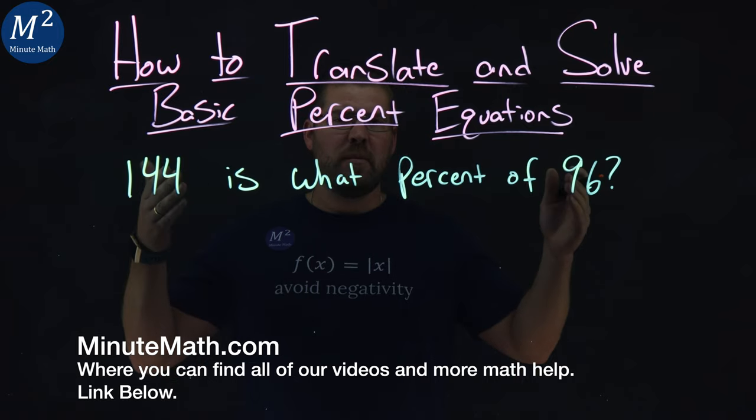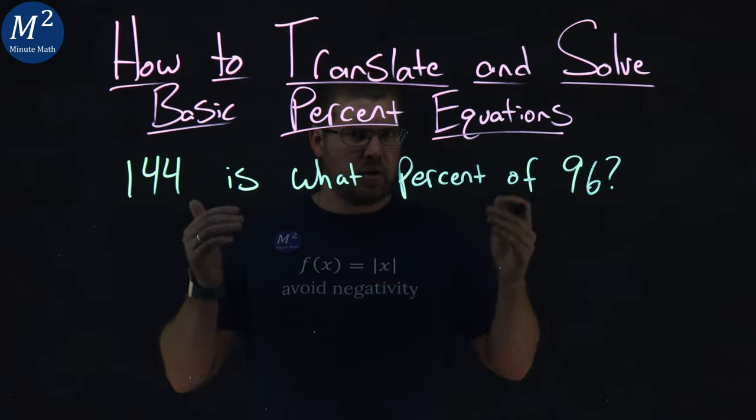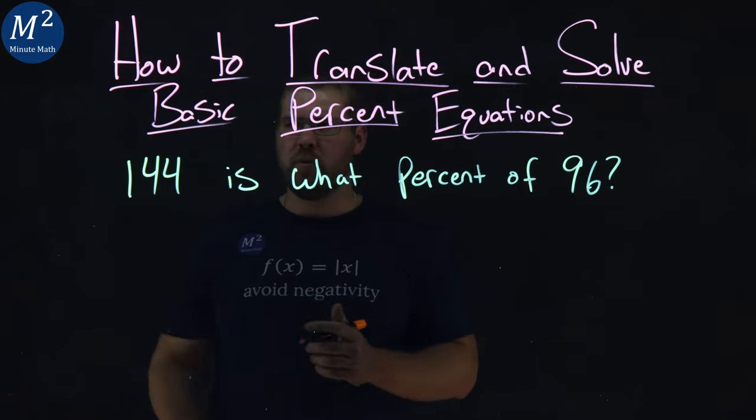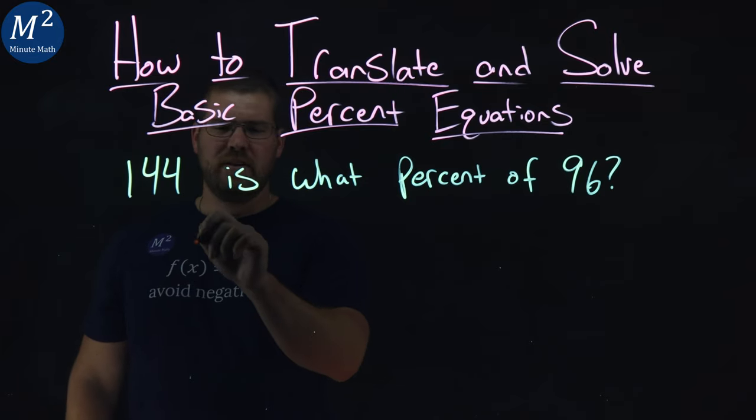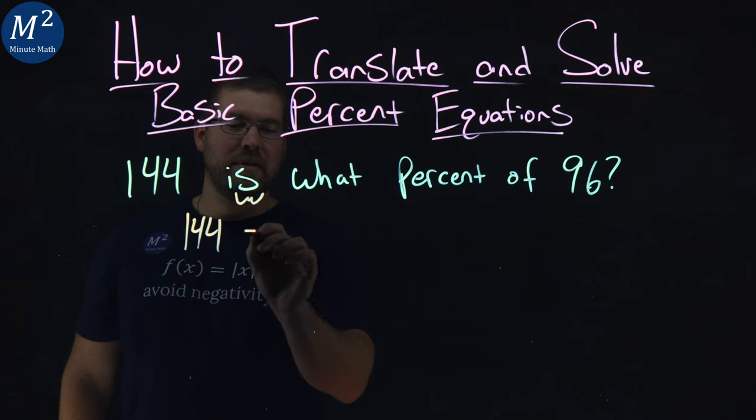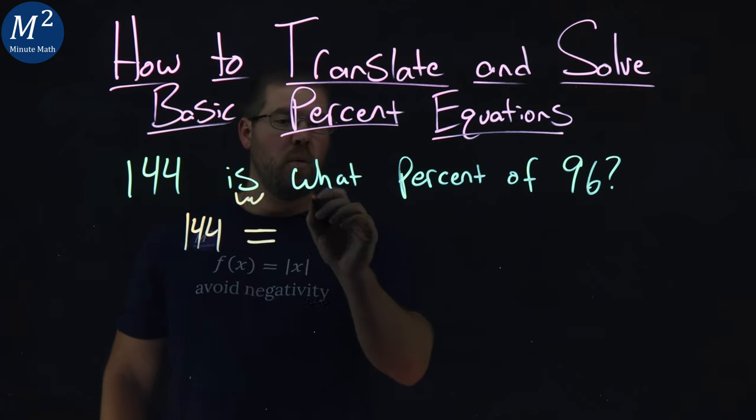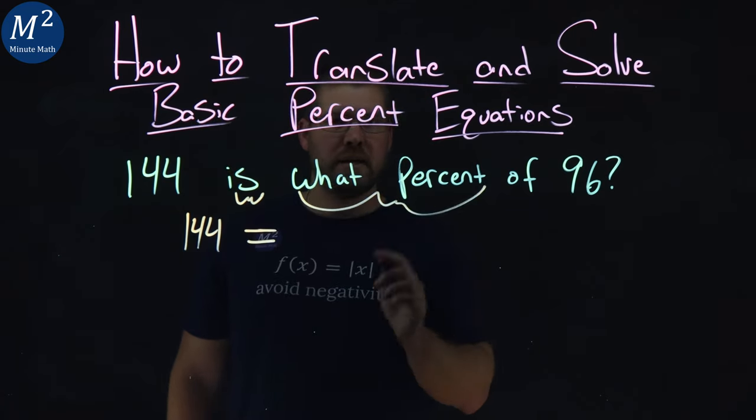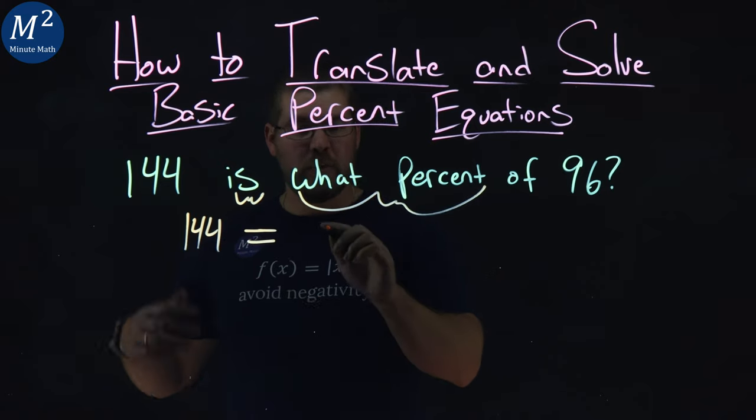I want to take this statement and write it as a mathematical statement. So 144 is the first part, pretty easy, comes down. 144 is comes down to be an equal sign. What percent - we don't know what that is, let's give it a variable.